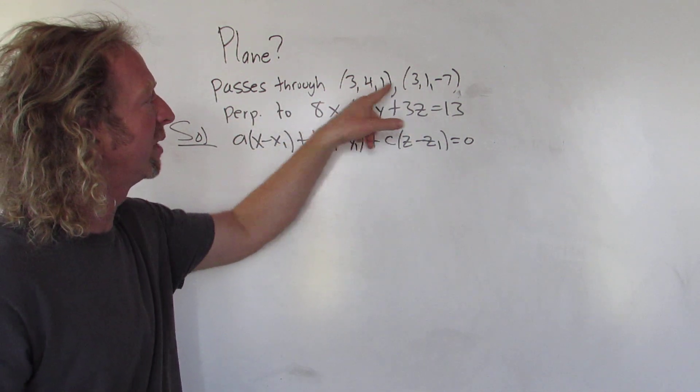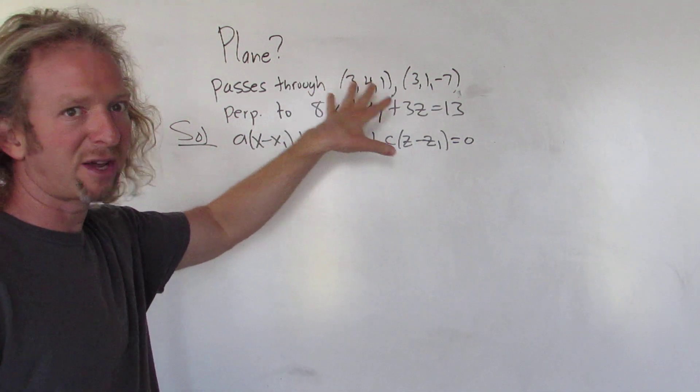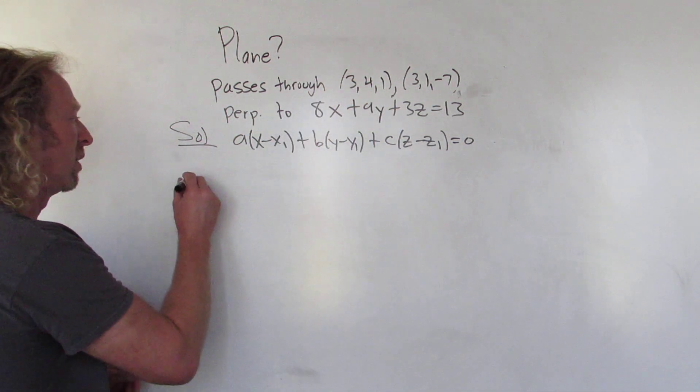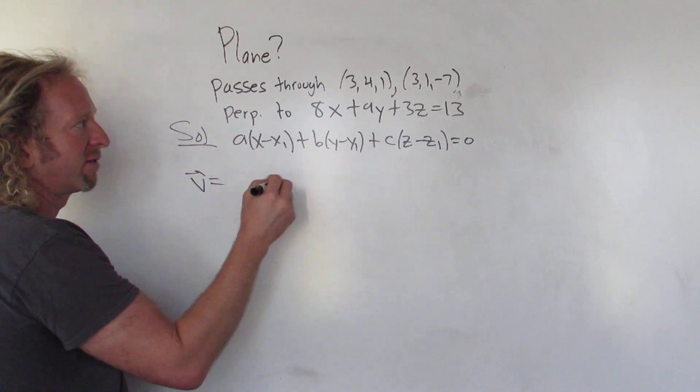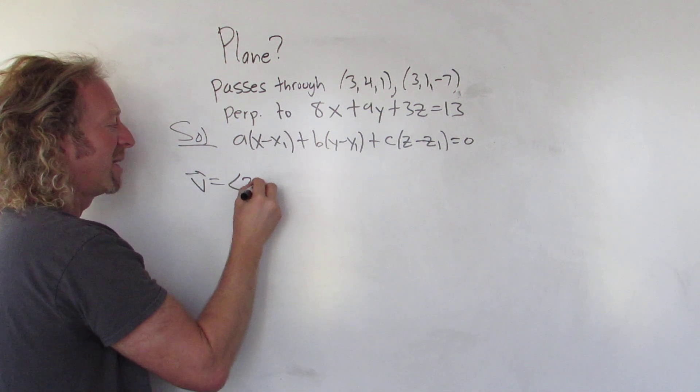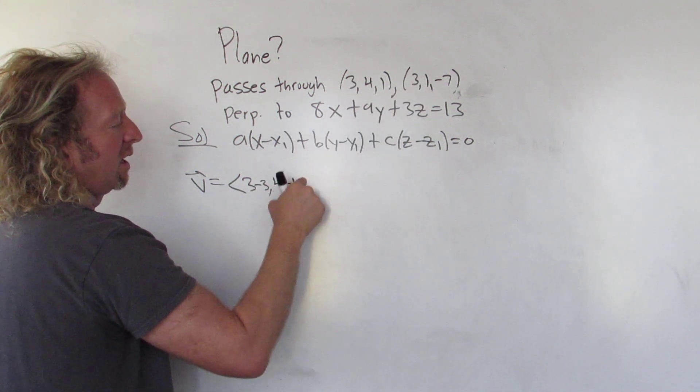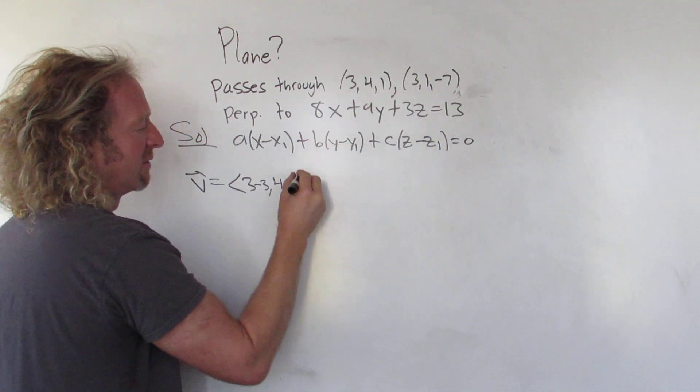So we're given two points on the plane, so given two points we can always find a parallel vector. So let's go ahead and do that first. So let's write down our parallel vector that we have. So 3 minus 3, I'm going to skip some steps here, no I won't. 3 minus 3, 4 minus 1, and then 1 minus negative 7. So what are we doing? We're finding a parallel vector.